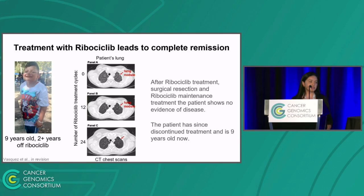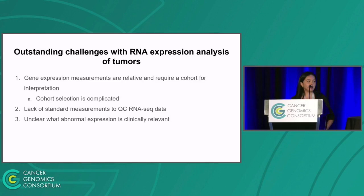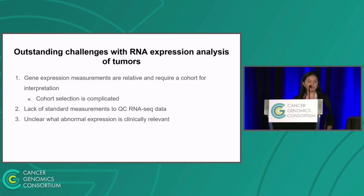Although this is a success story of incorporating RNA into the clinic, we do need to address barriers that prevent this from being routinely incorporated. As a field, we face several challenges: one, gene expression measurements are relative, meaning that determining if expression is high or low depends on what you compare to, and it's unclear what cohort to use as a comparison. Two, there is a lack of standard measurements to assess the quality of an RNA sequencing run. Finally, it's unclear what abnormal expression is clinically relevant — how do you know you have a good therapeutic target, or if you have multiple targets, how do you know which one to prioritize?